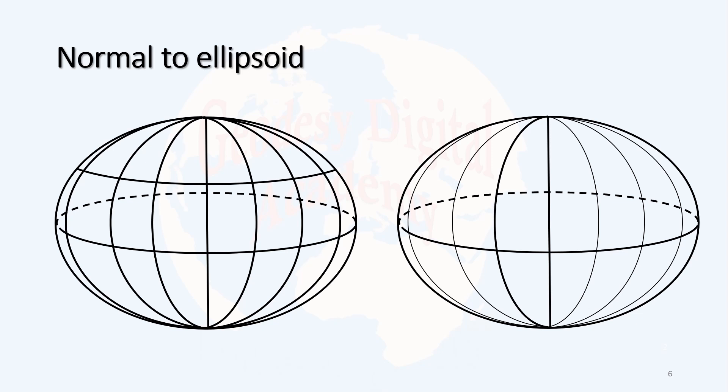Normal means a line which is perpendicular to the surface. For example, for a sphere, if you consider a normal, then the normal definitely will go through the center of the sphere.